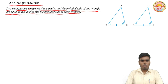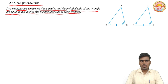जैसे हमने आपको पहले वाले वीडियो में बताया था कि कोई भी triangle SAS congruence rule से कैसे congruent होता है। उसमें हमने बताया कि उसके two sides — corresponding sides — equal हों और उसके बीच का included angle अगर equal होता है, तो वो SAS congruence rule से triangle congruent होता है।